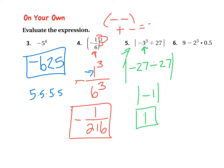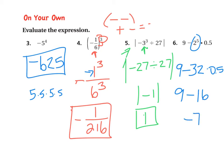Alright, let's do the last one, number 6: 9 minus 2 to the power of 5 times 0.5. According to PEMDAS, we are going to do the exponents first because we don't have any parentheses. So the first thing I'm going to simplify is 2 to the power of 5. 2 to the power of 5 gives me 32 times 0.5. According to PEMDAS, multiply and divide is next — so 32 times 0.5 gives 16. I rewrite 9 minus 16. Then 9 minus 16 gives a negative 7.